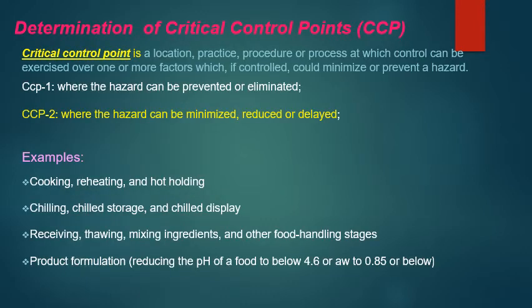For determination of critical control points, first there should be hazard analysis, and then CCPs are identified. A CCP is a location, practice, procedure, or process at which control can be exercised over one or more factors which, if controlled, could minimize or prevent a hazard. There are two types: CCP1, where the hazard can be prevented or eliminated, and CCP2, where the hazard can only be minimized, reduced, or delayed.